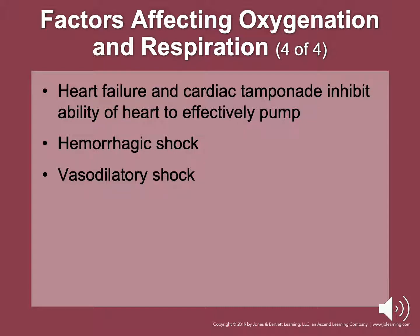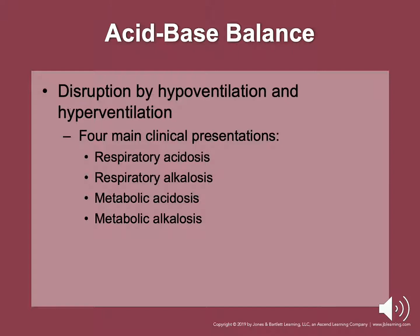Acid-base imbalances caused by hypo- and hyperventilation cause a shift in the acid-base balance, resulting in acidotic or alkalotic shifts, which may result in rapid deterioration or death. Excess acid can be expelled as carbon dioxide from the lungs. Slowing respirations will increase the level of carbon dioxide. Acidosis can be caused by low respiratory rate or tidal volume. Alkalosis can be caused by high respiratory rate or tidal volume. These fluctuations in pH result in respiratory and metabolic acidosis and alkalosis.